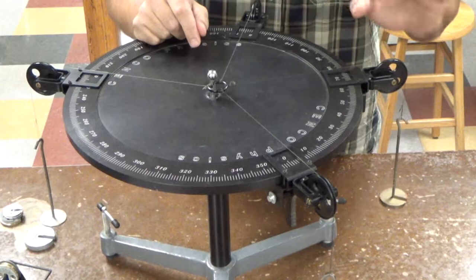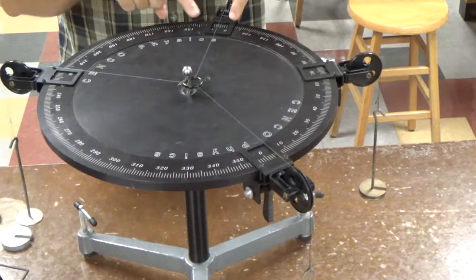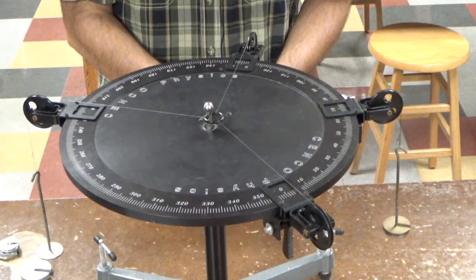The second vector, vector B, is right here. I have my hanger at 70 degrees, and on the end of the hanger, I have a total of 100 grams. And then vector C is over here at 135 degrees on my circle, and there is another 100 grams pulling there.